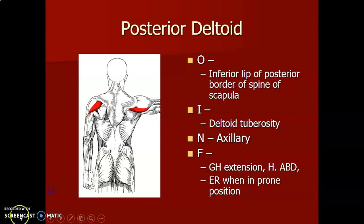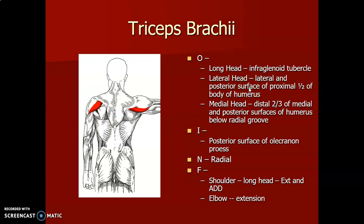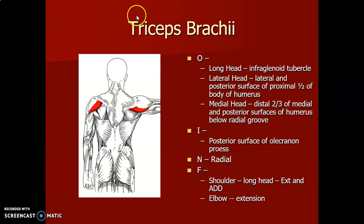Triceps brachii: the long head originates from the infraglenoid tubercle. The lateral head originates from the lateral and posterior surface of the proximal half of the body of the humerus. The medial head originates from the distal two-thirds of the medial and posterior surface of the humerus. It inserts onto the olecranon process and causes extension at the elbow and adduction and extension at the glenohumeral joint.